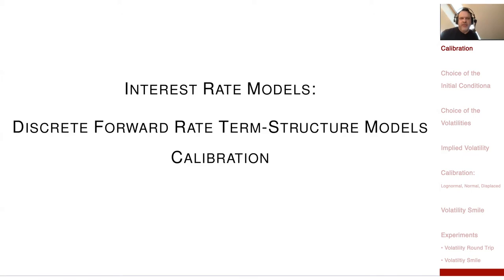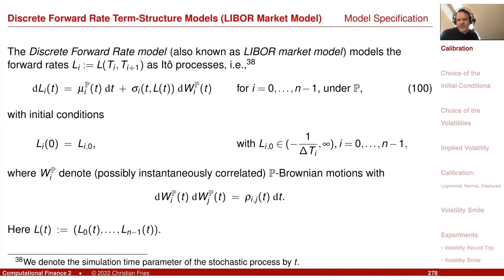Recall that our model is more or less a model framework. When I talk about calibration — how we determine the three parameters — I'd like to go back to the initial specification of our model, where we had some correlation parameter, an instantaneous correlation for the Brownian drivers. So we have here Brownian motion with instantaneous correlation between these drivers.